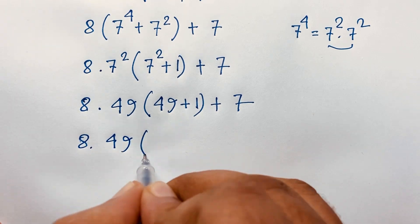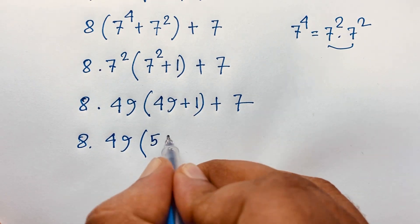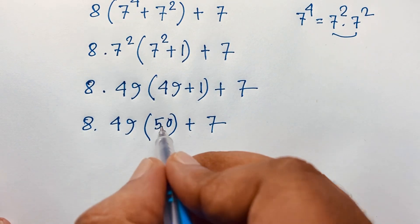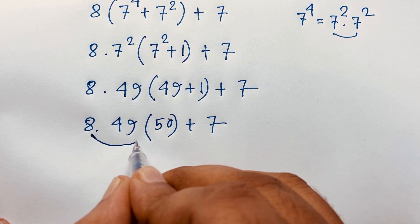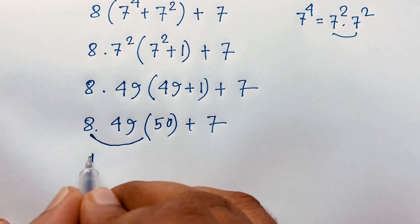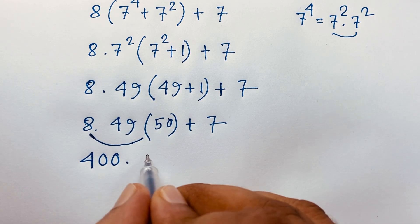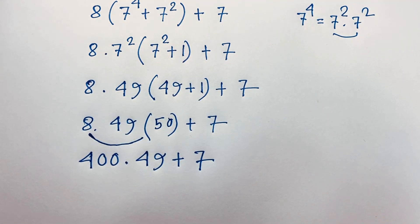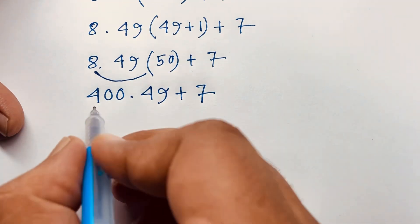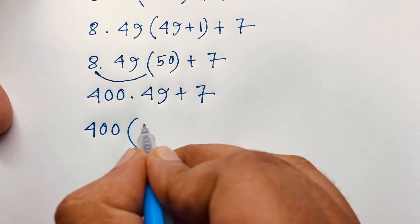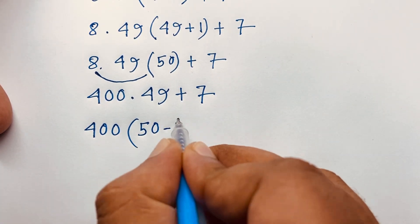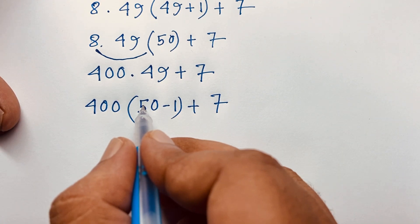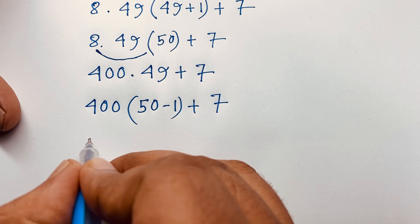Now here 8 times 49, and 49 plus 1 it will be 50, plus 7. Now here 8 times 49, then 49 plus 1 it will be 50, plus 7. So I can say that 50 times 8 it will be 400. I take 400 times 49 plus 7. Now here 400 times 49, and 49 it will be 50 minus 1, plus 7. Then 400 times 50 it will be 20,000.